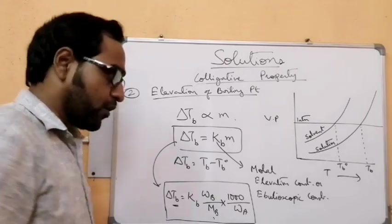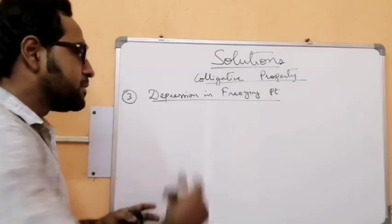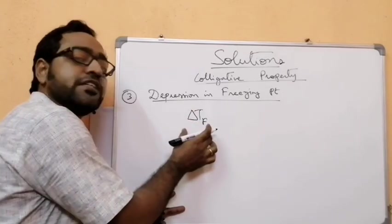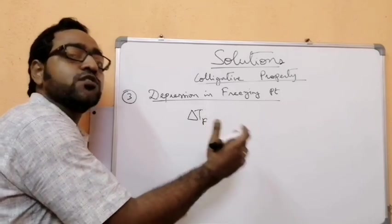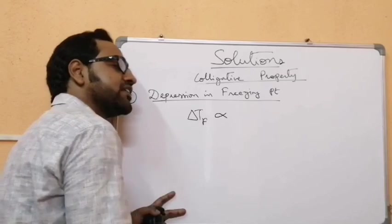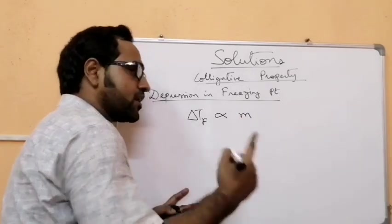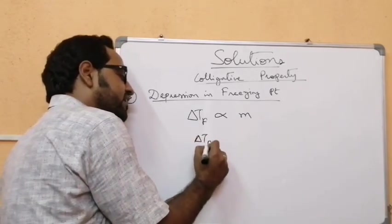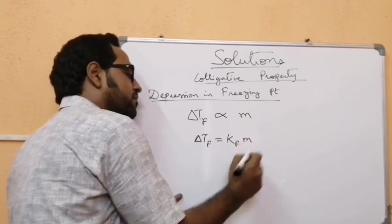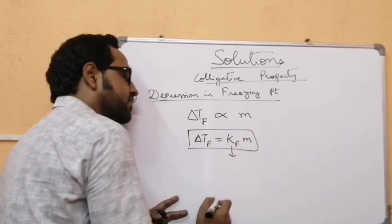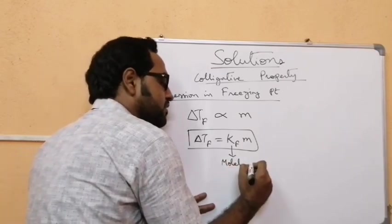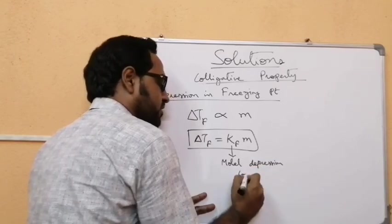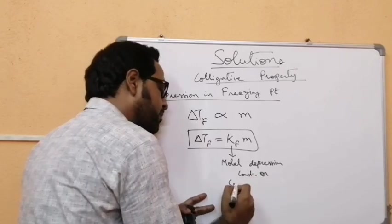Next, we will discuss depression in freezing point. ΔTF denotes the depression or lowering of freezing point, and ΔTF is directly proportional to the molality M of the solution. We write ΔTF = KF × M, where KF is called the molar depression constant or cryoscopic constant.